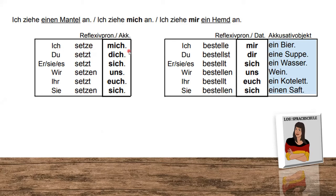'Ich setze mich' — I'm sitting down. 'Du setzt dich.' 'Er, sie, es, man setzt sich.' 'Wir setzen uns.' 'Ihr setzt euch.' 'Sie setzen sich.' This you have to learn by heart. It looks very similar to the personal pronouns, but please learn it as a totally separate table from the Akkusativ pronouns.